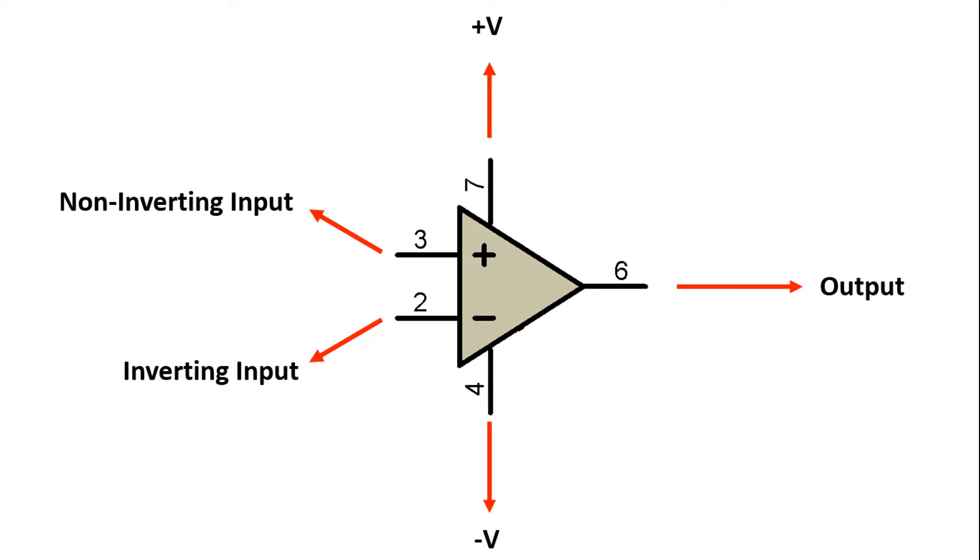The signal input to be amplified here is from the 2nd and 3rd inverting and non-inverting pins. It is taken from the output, which is the 6th pin as an amplifier. The operational amplifier must also be fed positive and negative from the 7th and 4th pins.